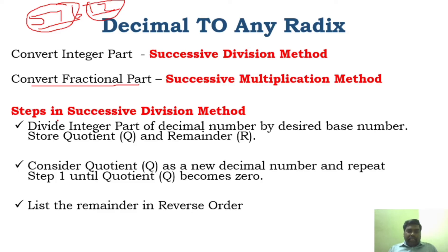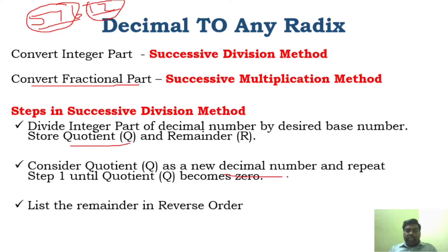The successive division method is simple. Divide the integer part of the decimal number by the corresponding base, and store the quotient and remainder. Consider the quotient as the new decimal number and repeat until the quotient becomes 0. Then write the remainders in reverse order — from bottom to top.